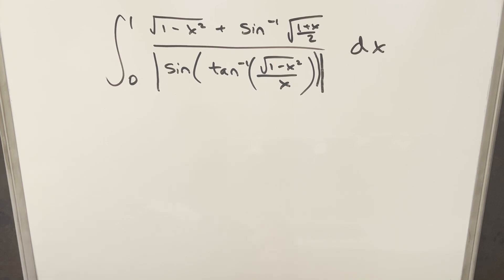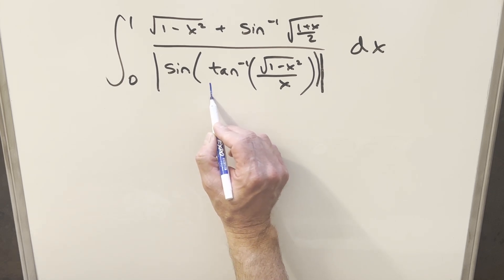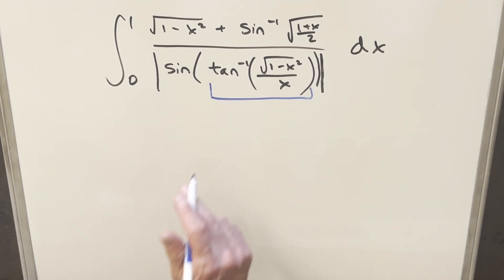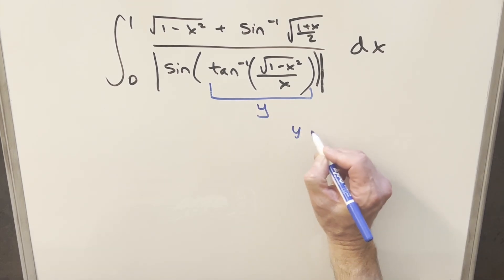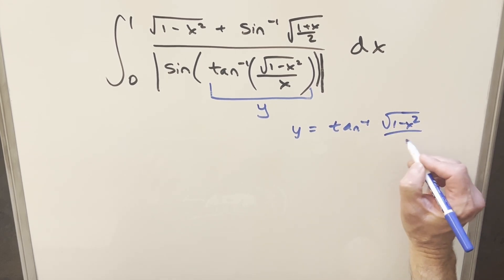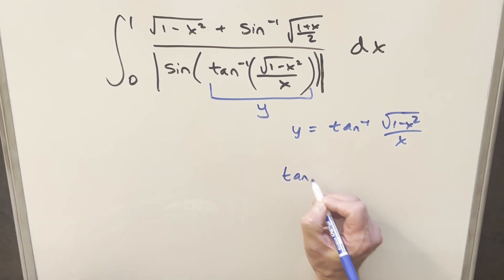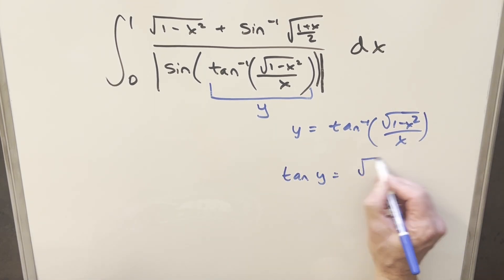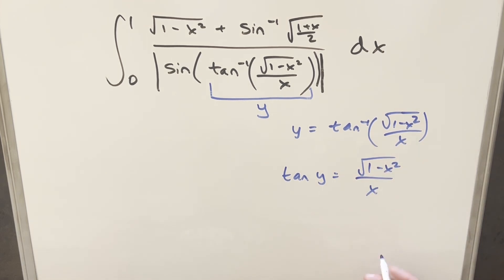To get started, I want to make this more manageable. I don't really know where to start, so let's find something we can work with and simplify. What I want to do is just start with this arctan thing. We'll label this y, so that gives us y = arctan(√(1 - x²) / x). Taking tangent on both sides, we can say tan(y) = √(1 - x²) / x. Let's use this to draw a triangle and see if we can get more information.